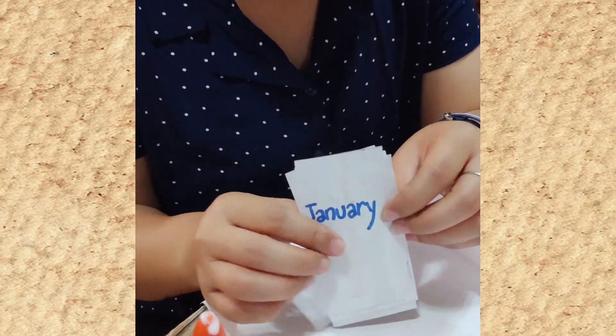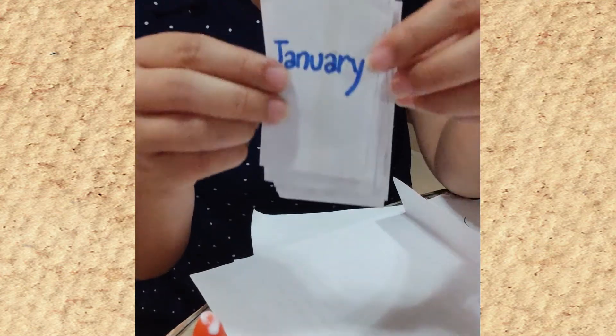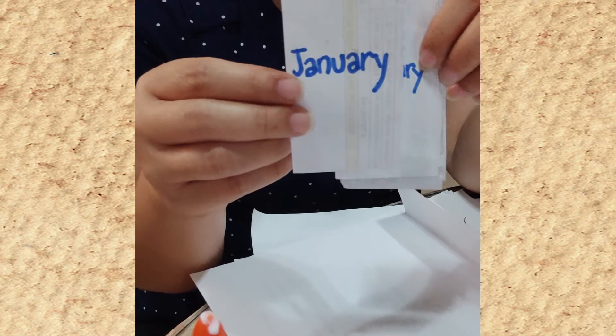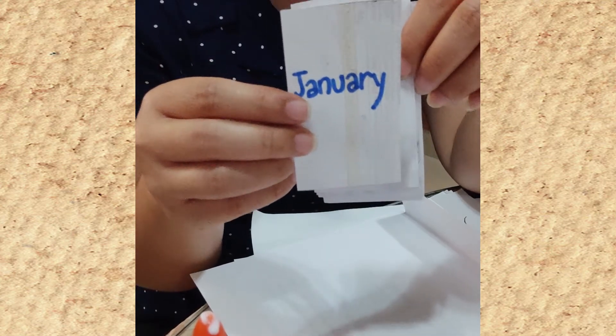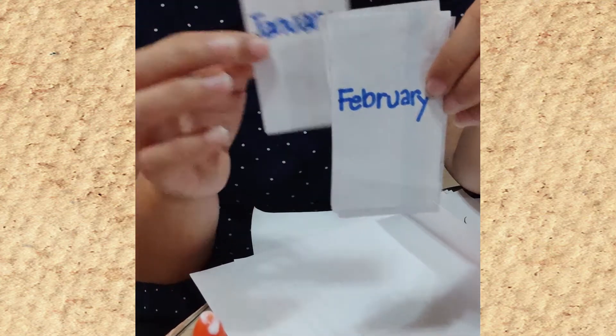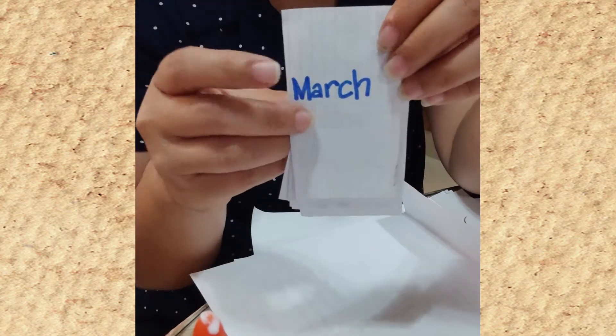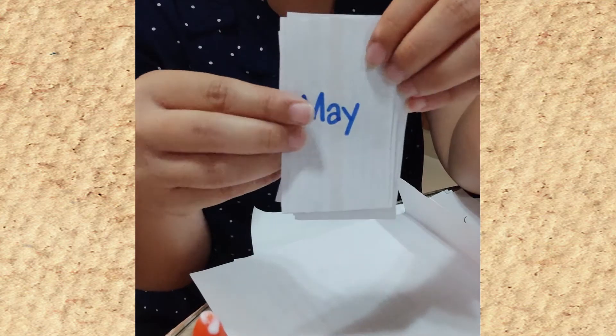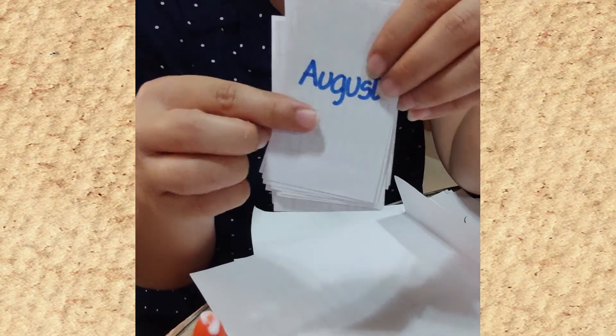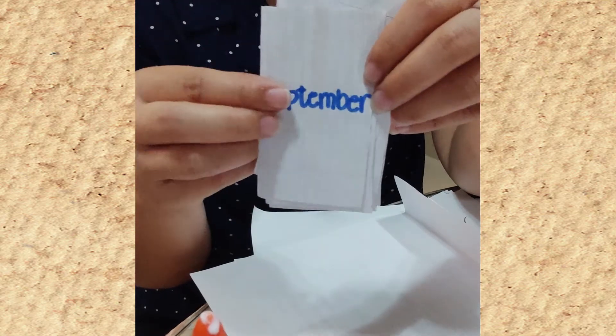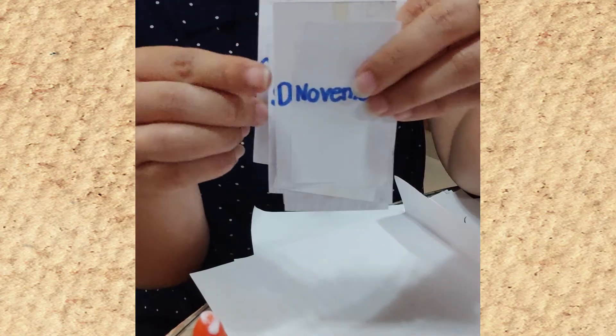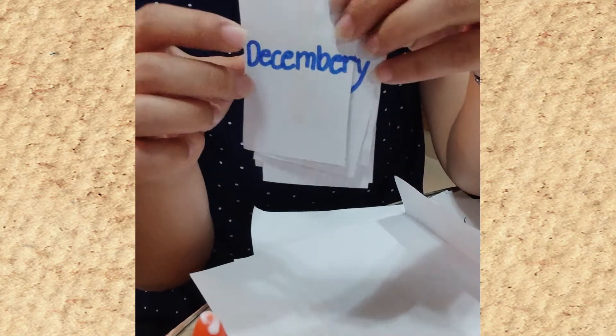After cutting, you write down in the paper the month of the year. So, there are 12 months in a year. Write January, February, March, April, May, June, July, August, September, October, November, and December.